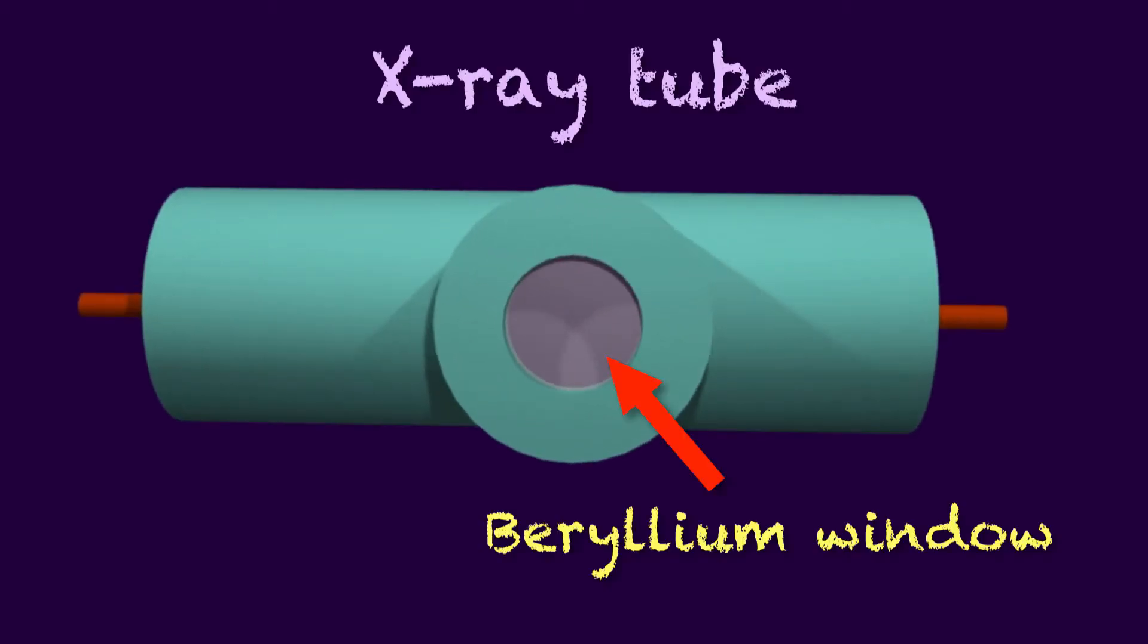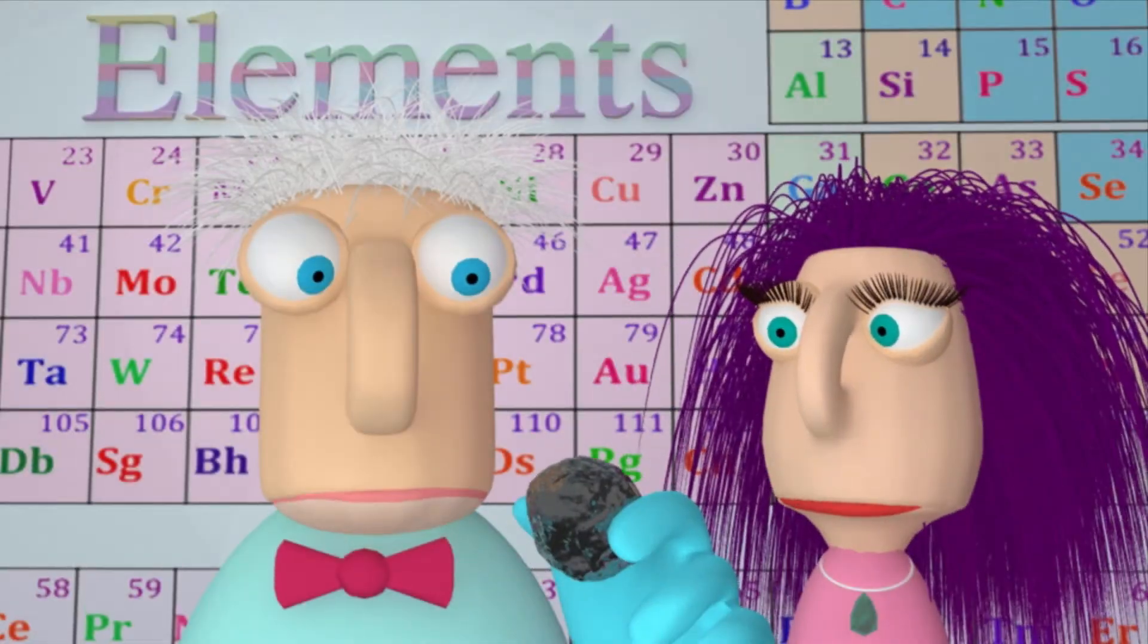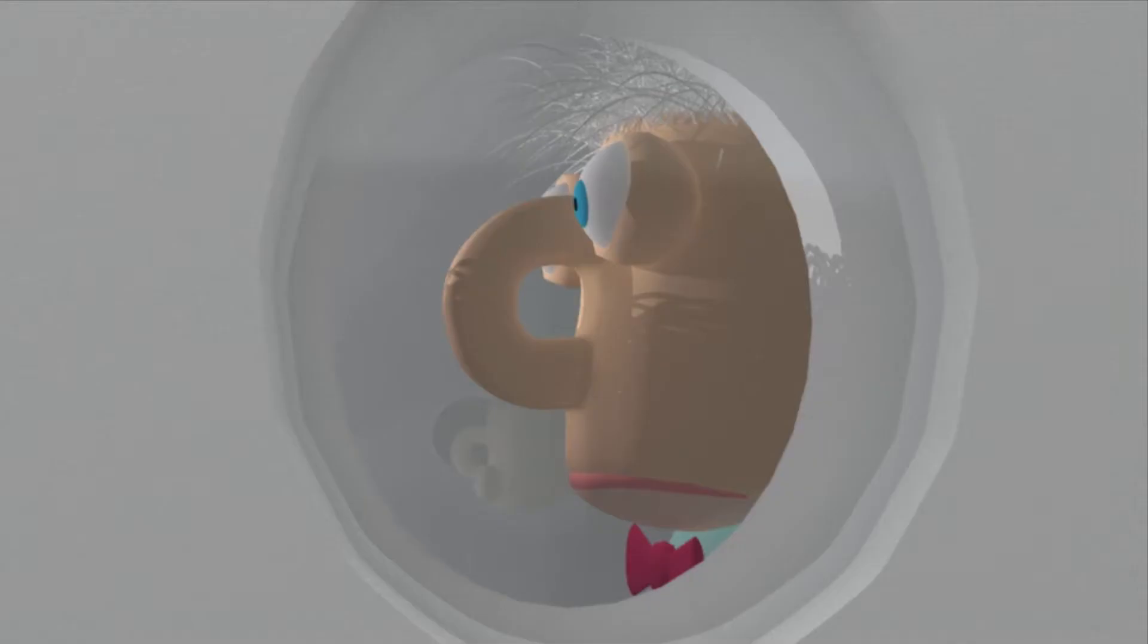Beryllium is widely used in x-ray machines because it is transparent to x-rays, just like window glass is transparent to visible light.